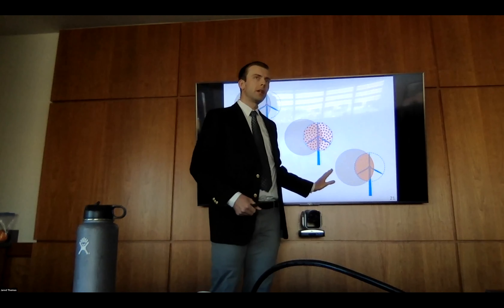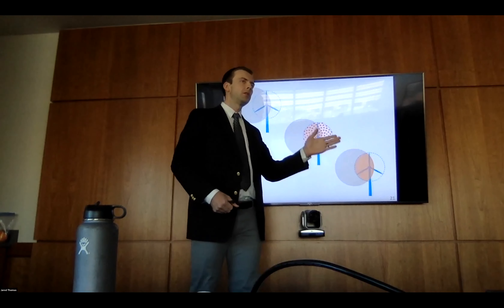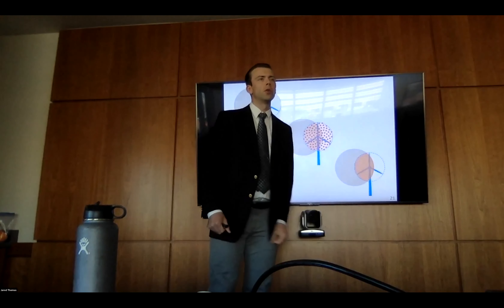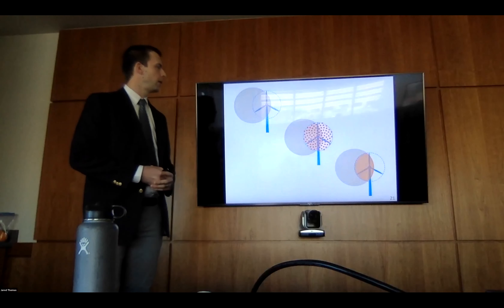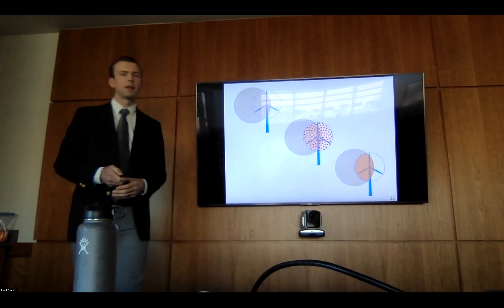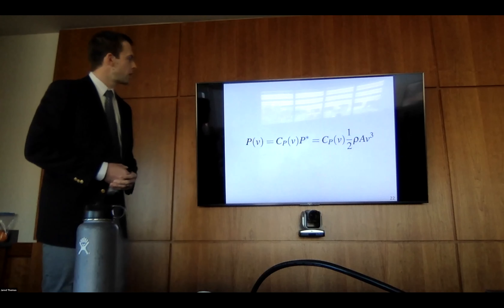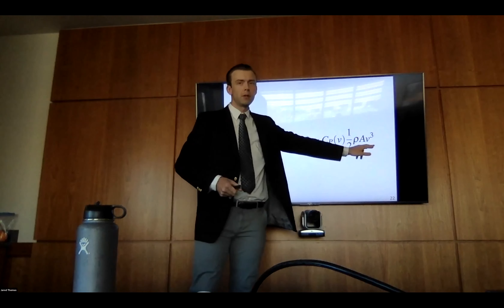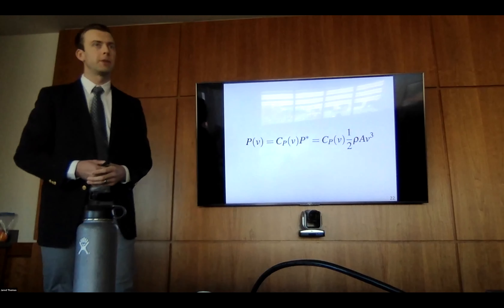Some wake models have a constant wind speed across the cross section of the wake that only changes downstream. In those cases, we can use the overlap area to do a weighted average and calculate the effective speed on the rotor directly without doing a full interval integration. Once we have the wind speed at the rotor, we plug it into our power equation to find the power of each wind turbine, which is based on the cube of the velocity — which is why wakes are such a big deal.